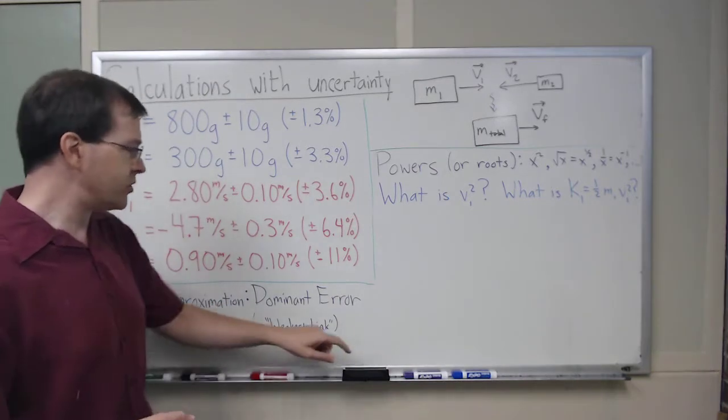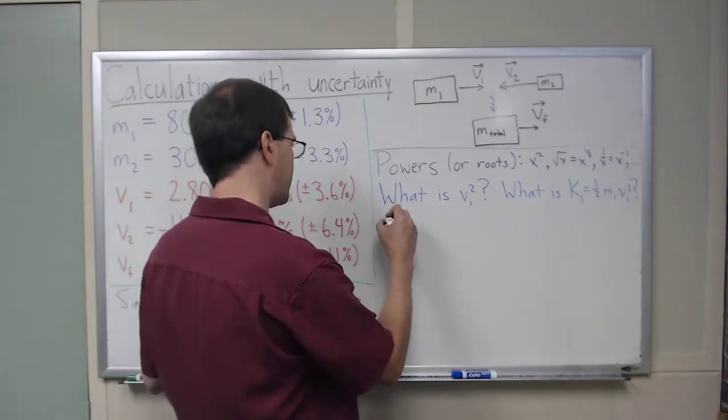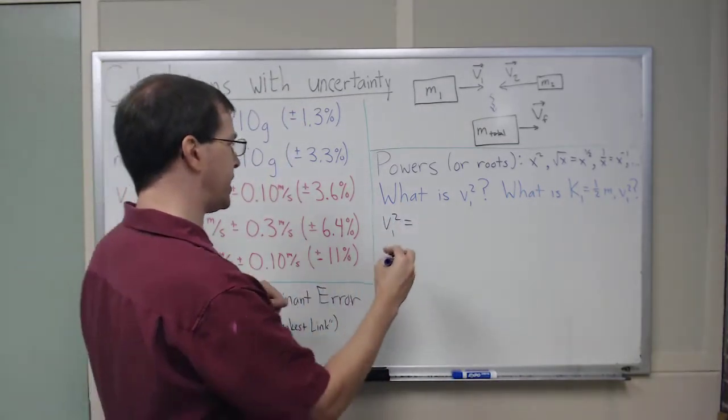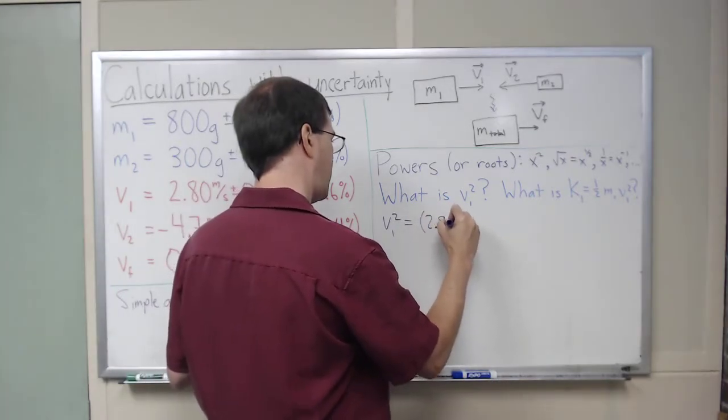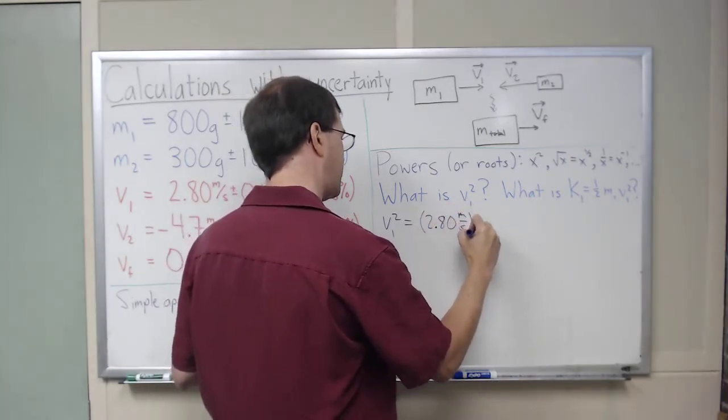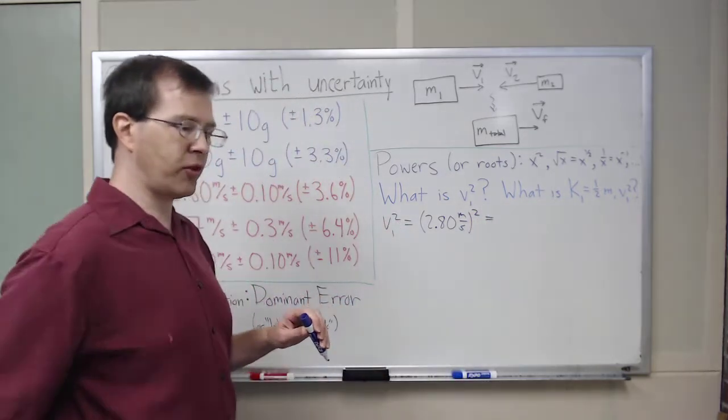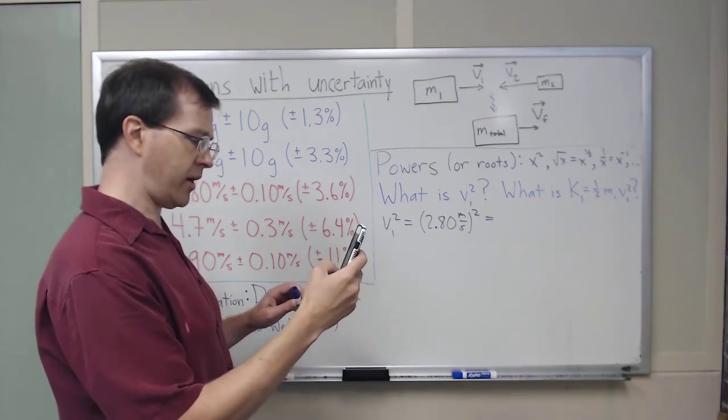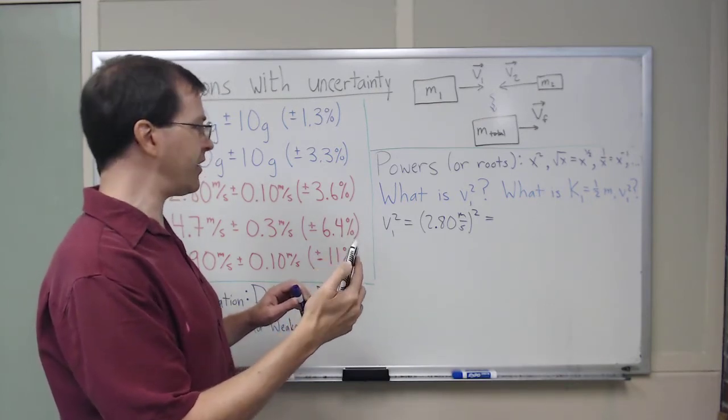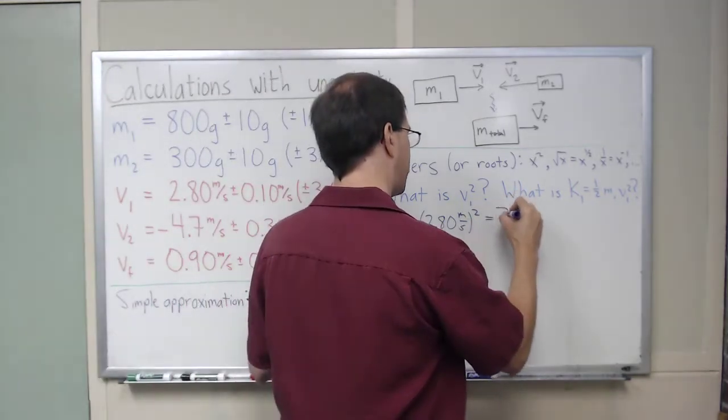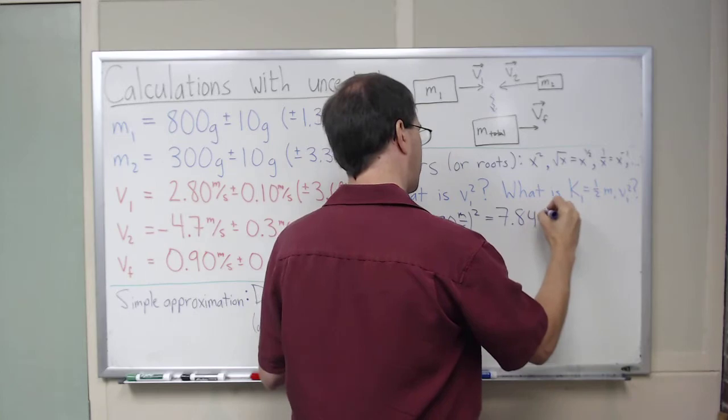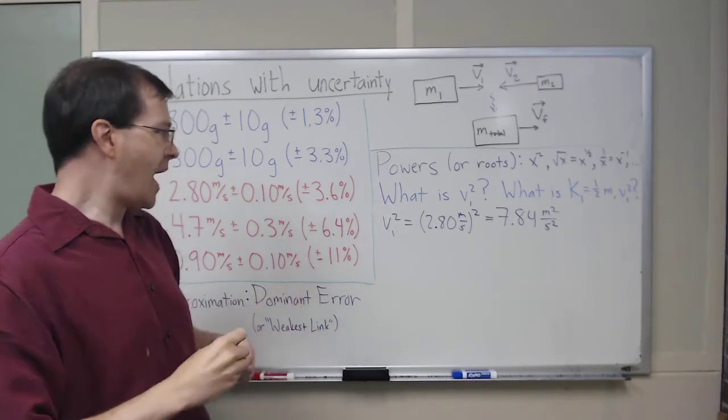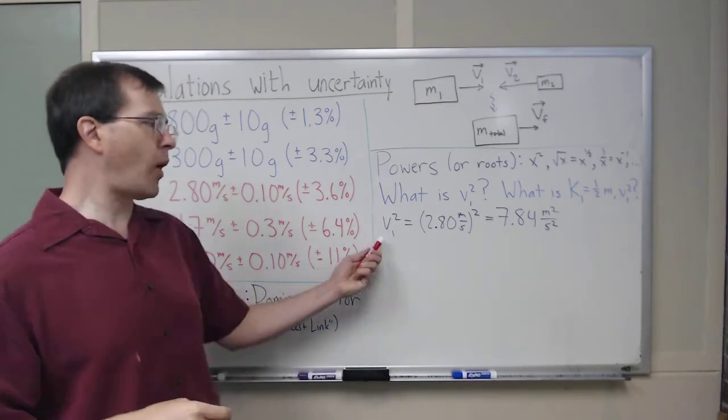Obviously, I can do this calculation. v1 squared is going to be 2.80 meters per second squared. And I keep forgetting to grab a calculator. I should have done it for this one. But anyway, 2.8 squared is 7.84. So this is 7.84 meters squared per second squared. Don't forget to square the units. That's my v1 squared. But now the question is, how do I deal with the fact that I'm squaring this?